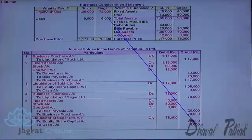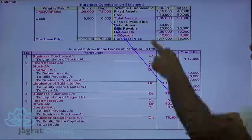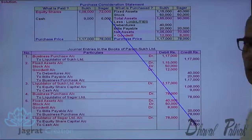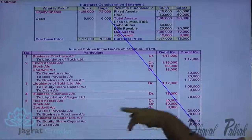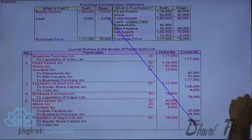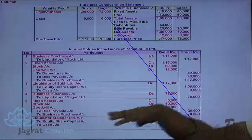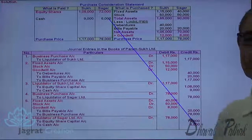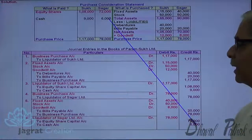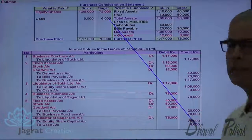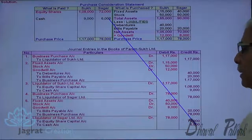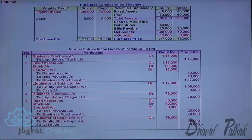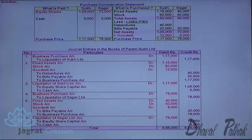One more entry that should be written: Debentures of Souk Limited Account debit Rs. 40,000; to Debentures of Param Souk Limited Account credit. This entry was omitted here, but you should write it in the examination.